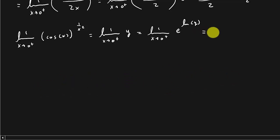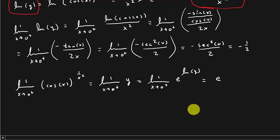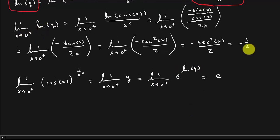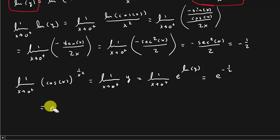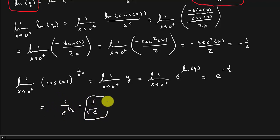So this is equal to e raised to negative one half, which is 1 over e to the one half, which is 1 over the square root of e. And that is your answer.